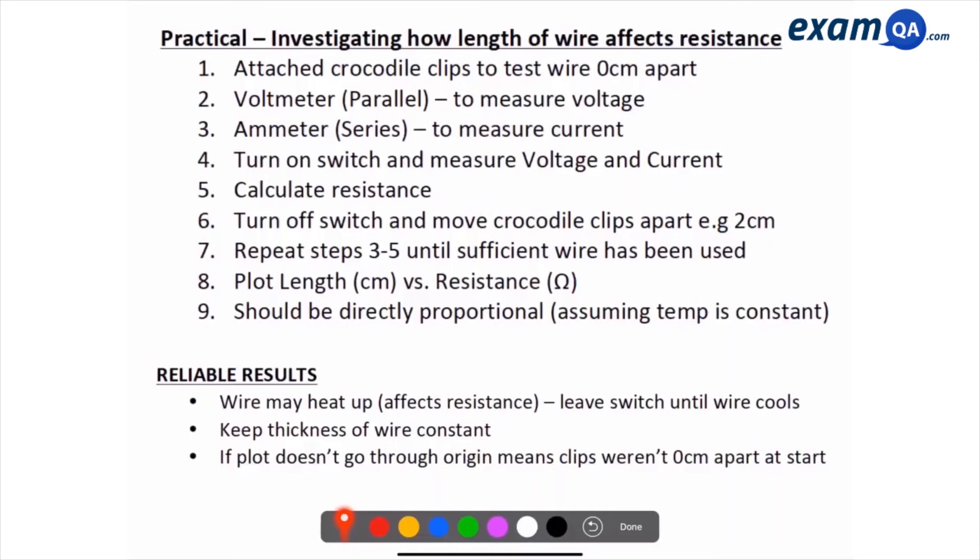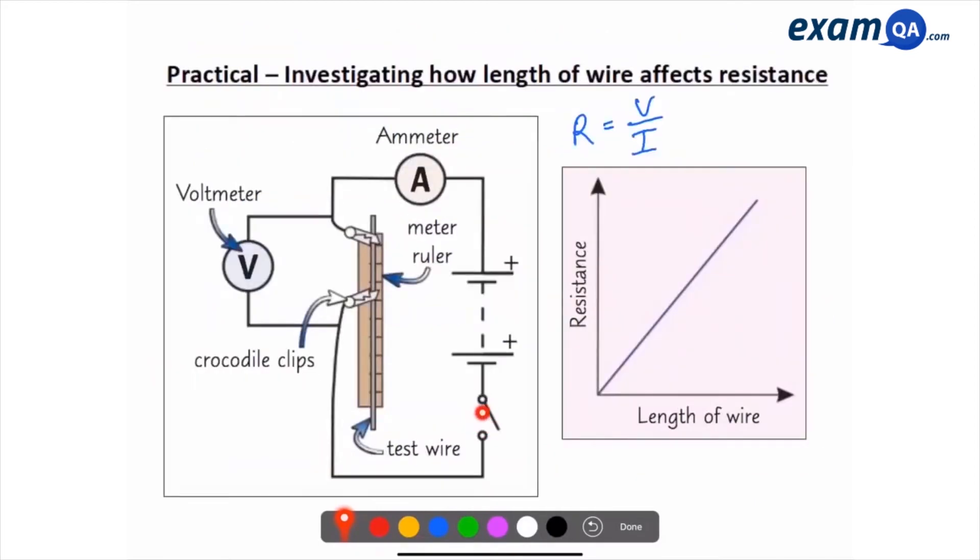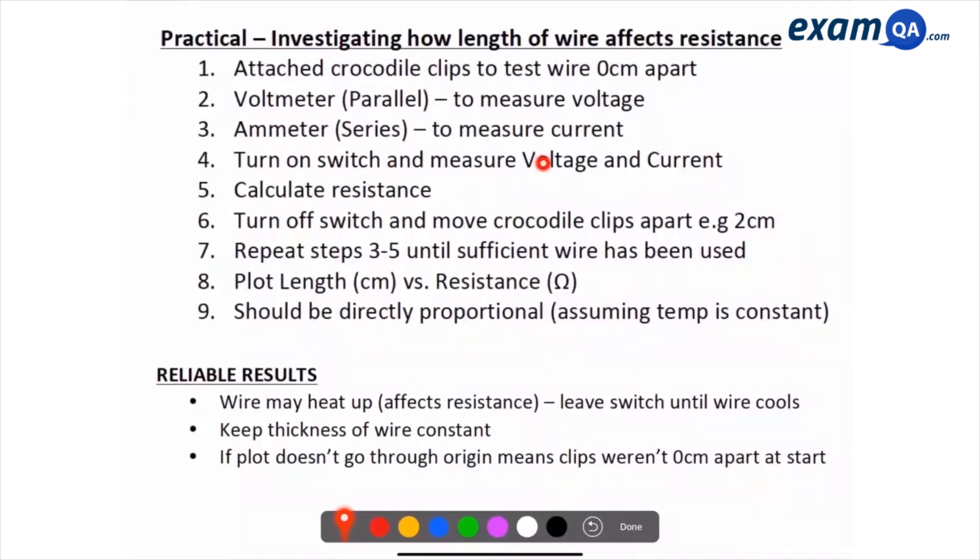The voltmeter should always be in parallel and the ammeter should always be in series. Then you turn on your switch, so you close that, turn the switch on. And then you measure what the value is on the voltmeter and on the ammeter. OK, so turn on the switch and measure voltage and current. Then you can use V equals IR to calculate resistance.